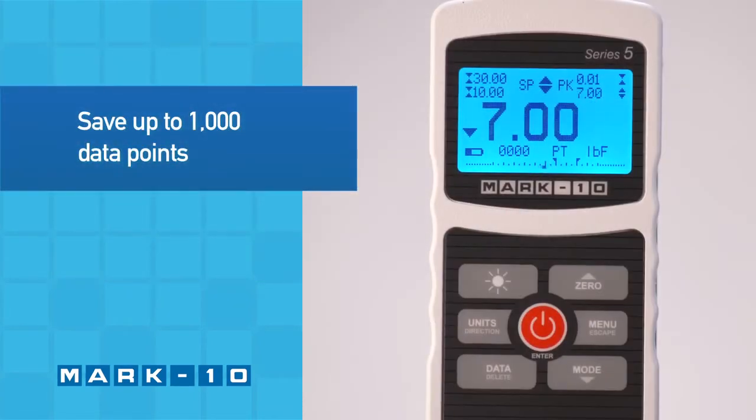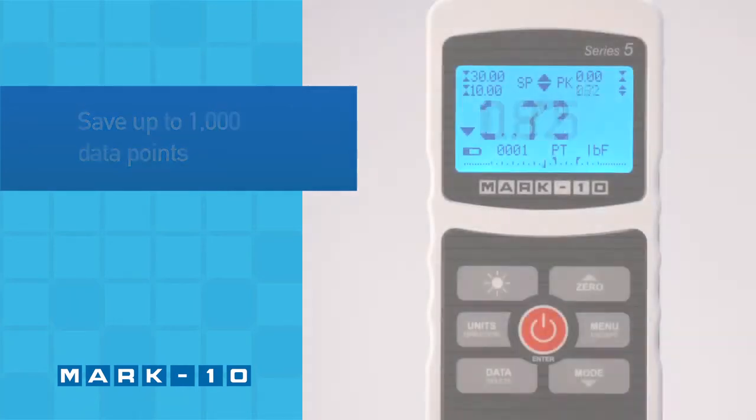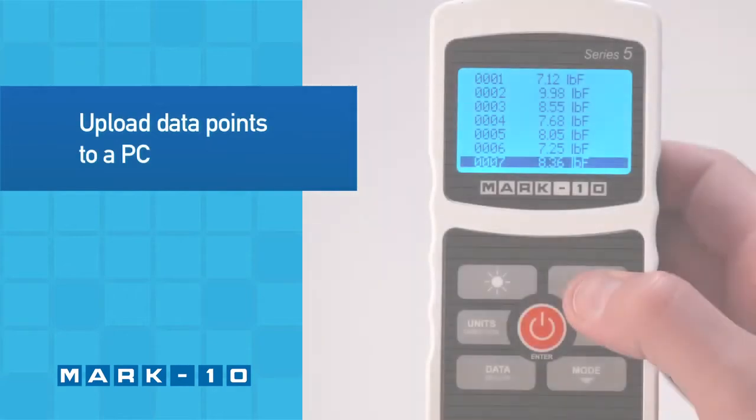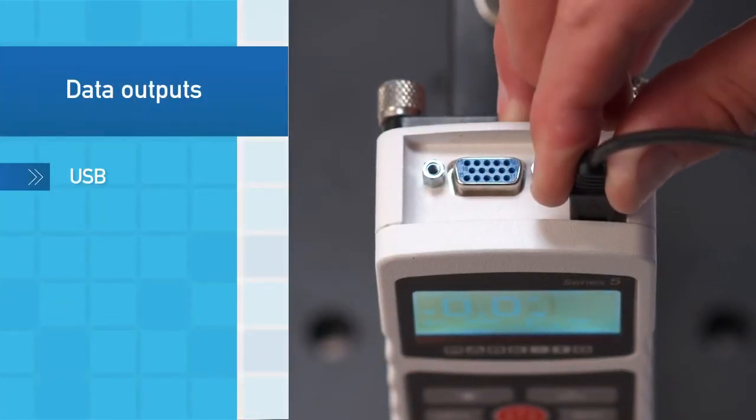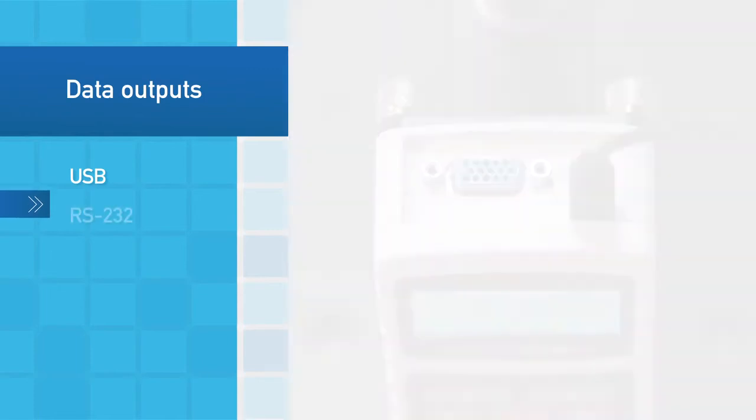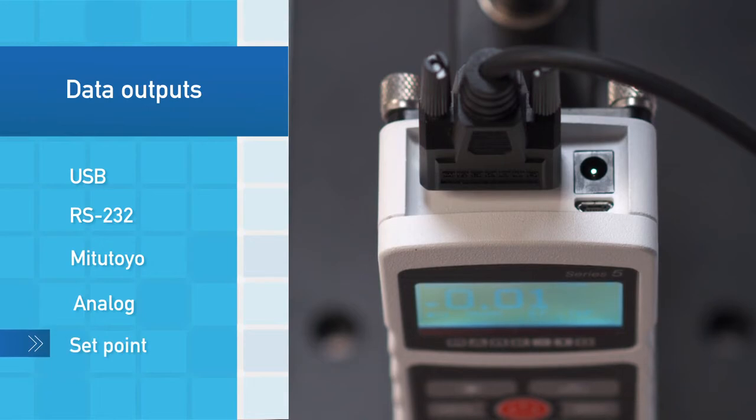Up to 1,000 data points may be saved. Data may be viewed in memory and later downloaded to a PC. Several types of output are possible, including USB, RS-232, Mitutoyo, analog, and setpoint outputs.